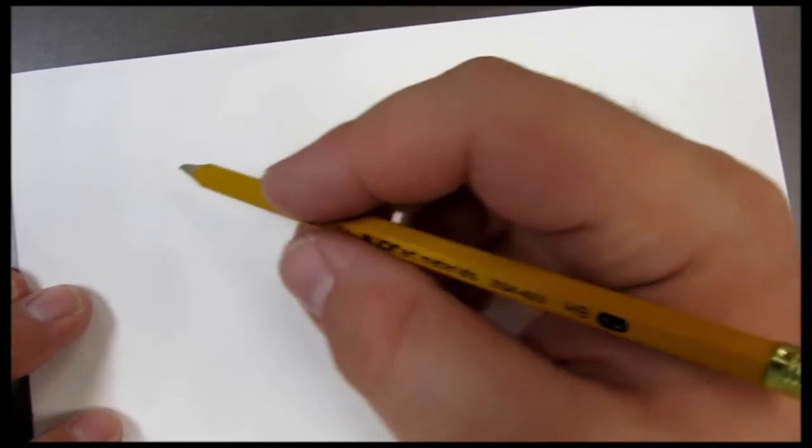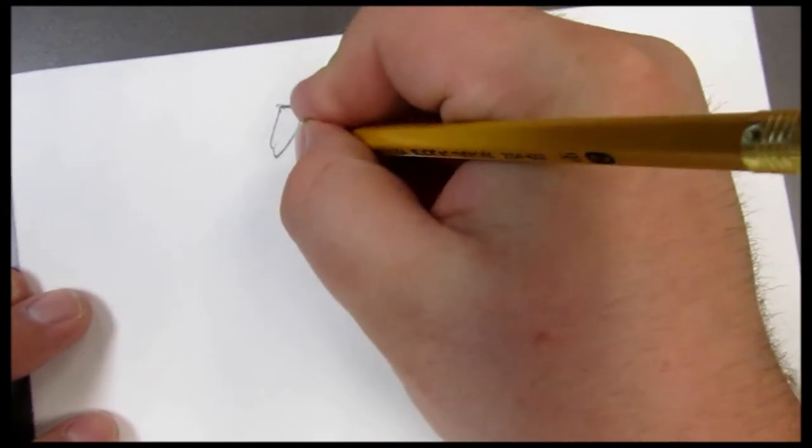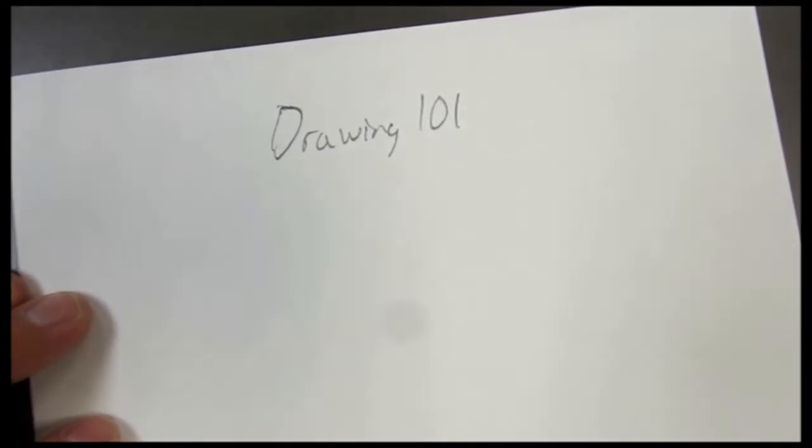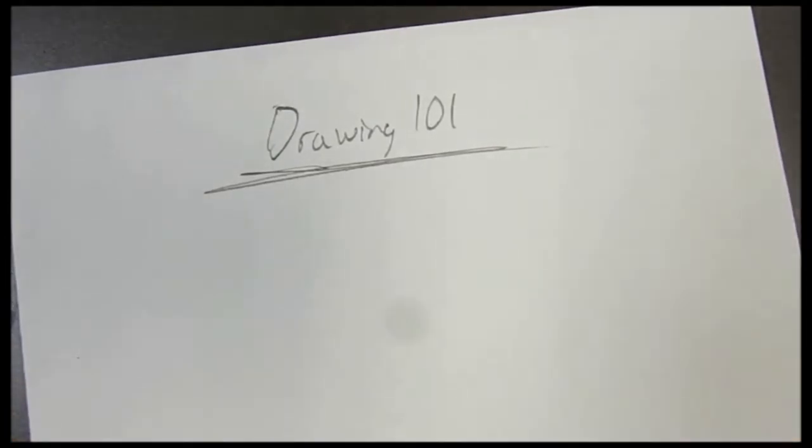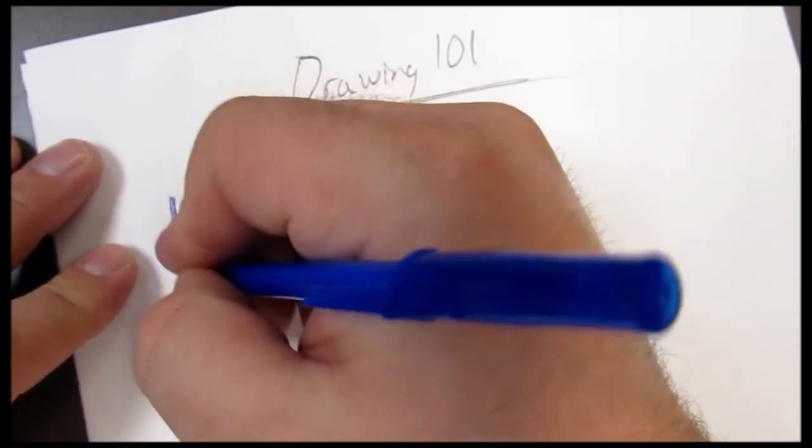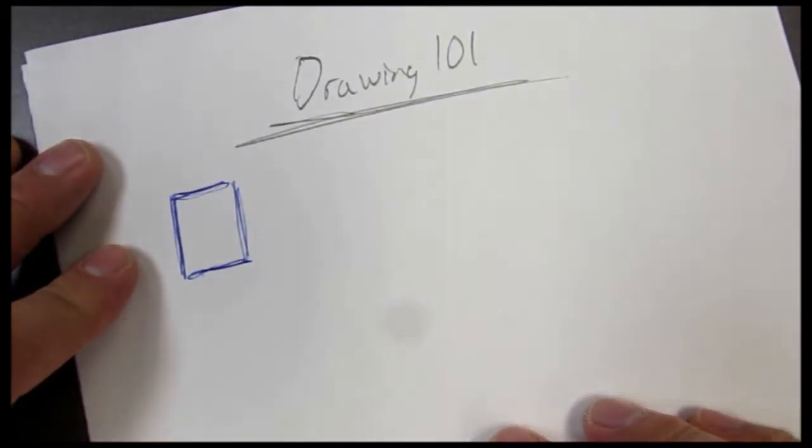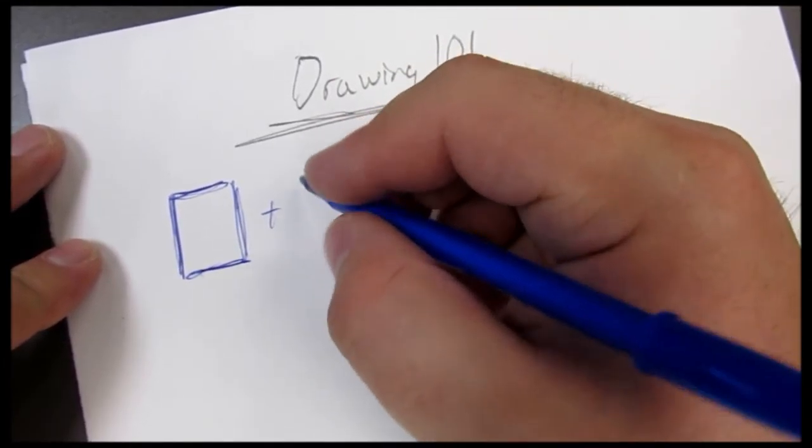Alright, here we go. We are going to be working on some of our basic shapes again. Four basic shapes. Some of you already have 'Drawing 101' on your paper. I'm going to switch back to the pen. I like the pen better. It works a little smoother for me. Alright, so we've already talked a little bit about how to take this square and we are going to change it, augment it over to the cube.